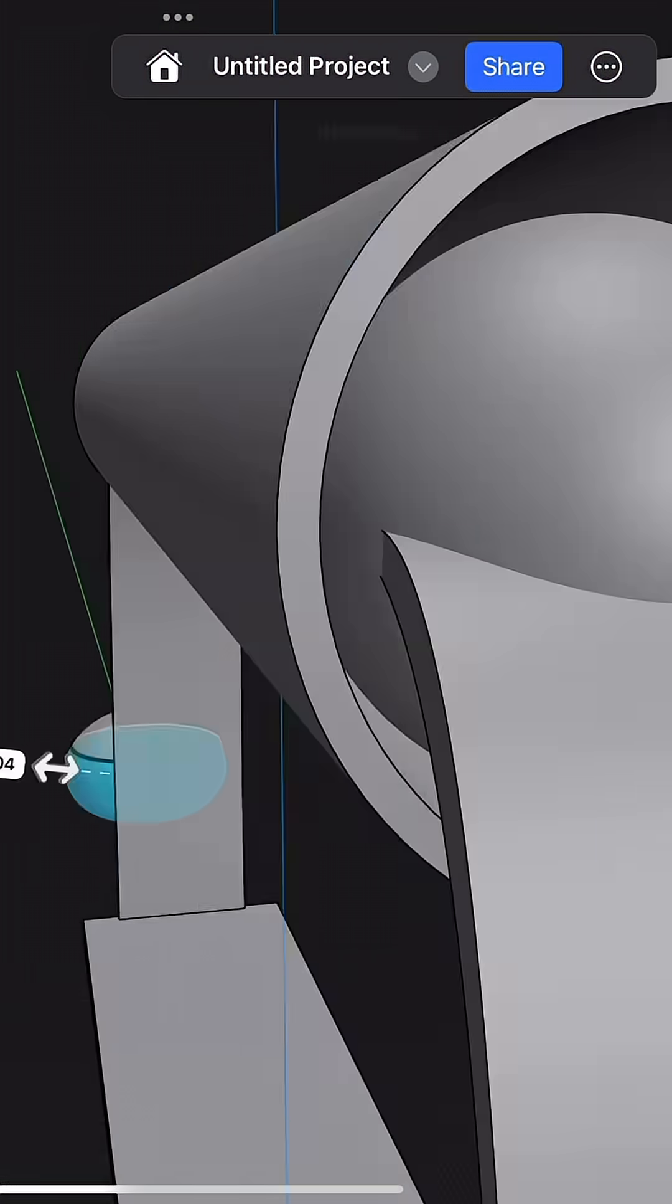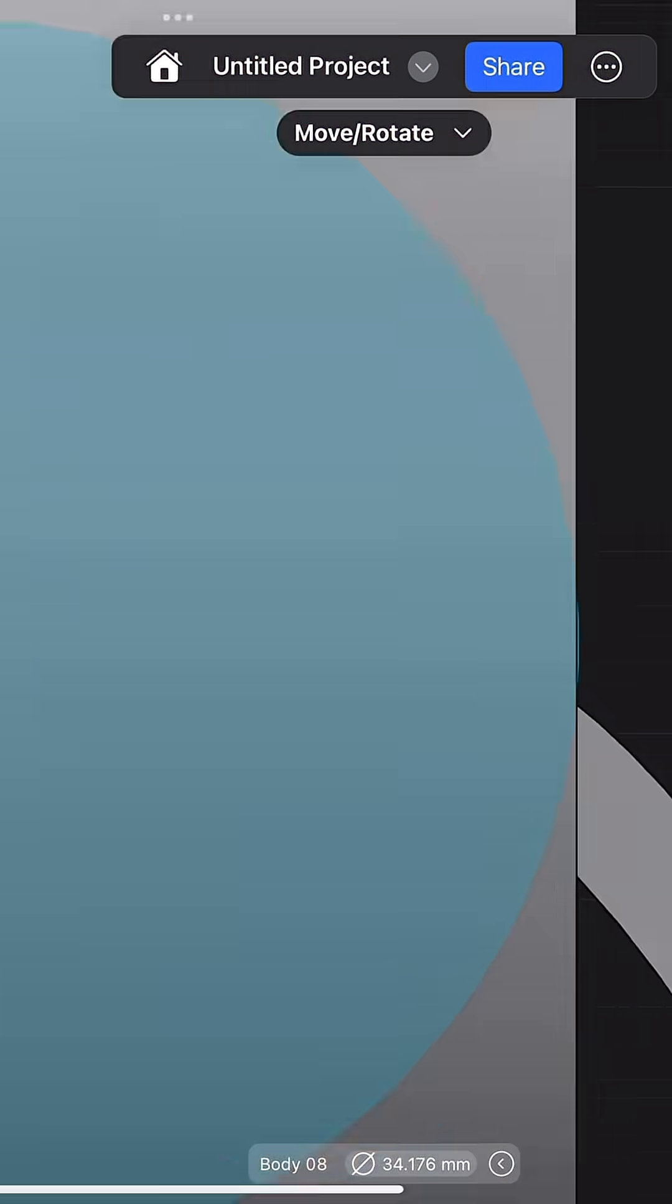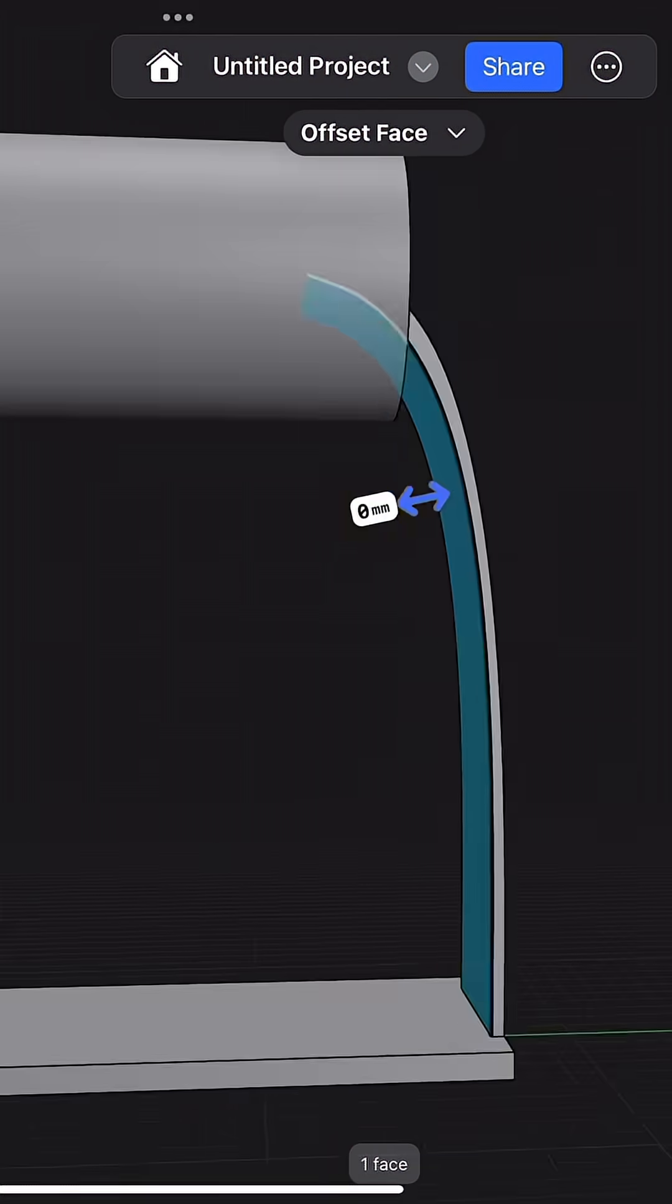But there was one problem. The old paper towel holder that came with the place was way too long. The tube for the reusable towels didn't fit and it would just slide right off.